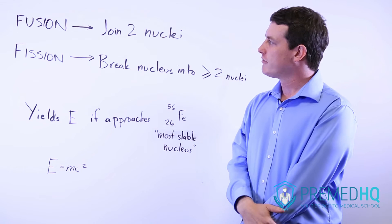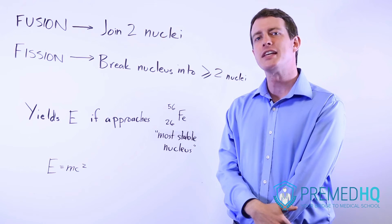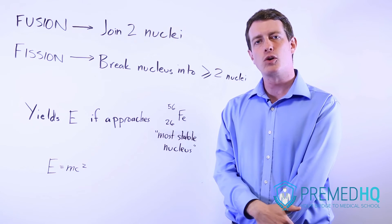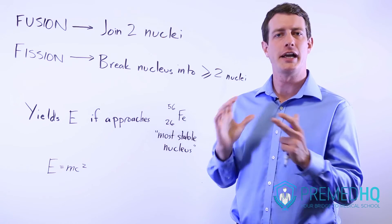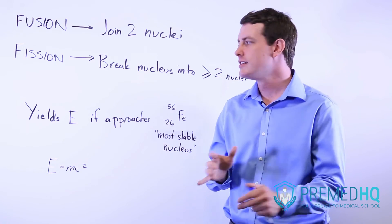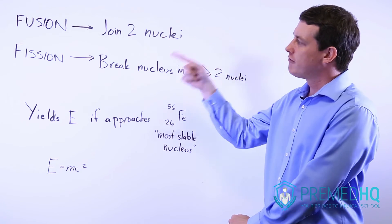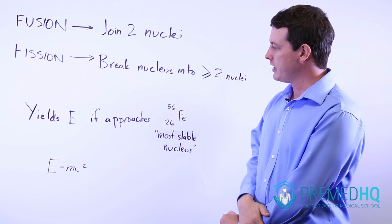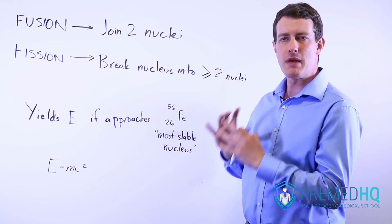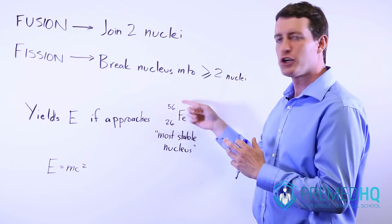The interesting thing about fusion and fission is that both of them can generate energy. And the question is how big the reactant nucleus is. Both fusion and fission will yield energy if the size of your main nucleus gets closer to iron 56.